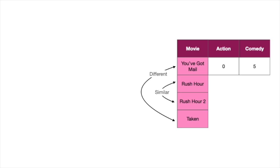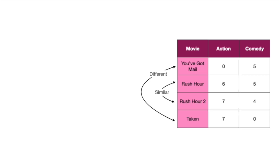You've Got Mail has zero for action because it has no action, and five for comedy. Rush Hour has six and five because it has both action and comedy. Rush Hour 2 has seven and four because it also has both action and comedy. Taken has a high score for action and a low one for comedy.